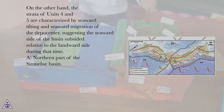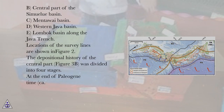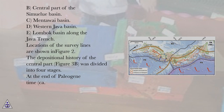A: Northern part of the Simulu Basin. B: Central part of the Simulu Basin. C: Mentawai Basin. D: Western Java Basin. E: Lombok Basin along the Java Trench.